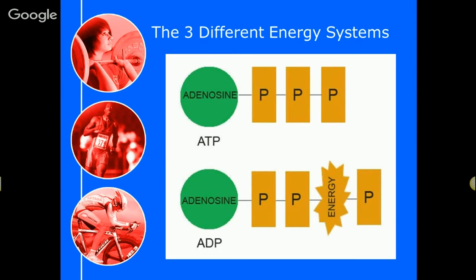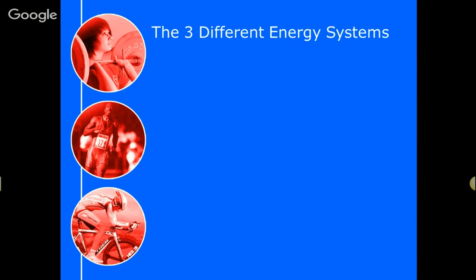Now this might sound a little bit complex, but at level two really all you need to understand is that ATP — adenosine triphosphate — is the currency that we are able to create energy from. We can't do it when there isn't ATP. So it's the job of those energy systems to take that ADP, where we've got adenosine and two phosphates and a lonely P, and pop that P back on so we can use that molecule all over again. There are three different ways that we can create ATP in the body.